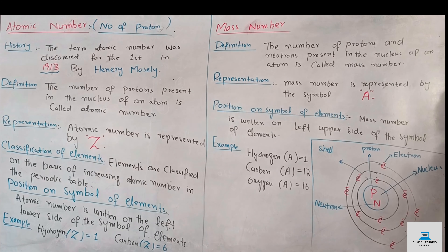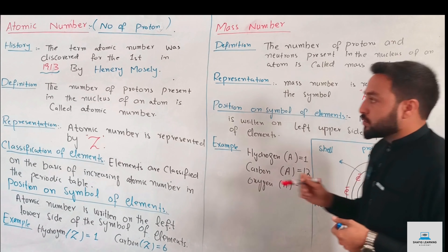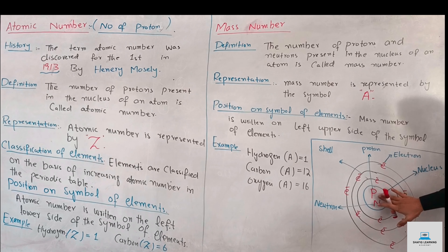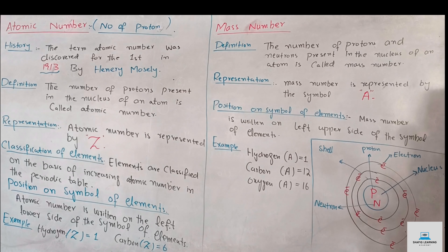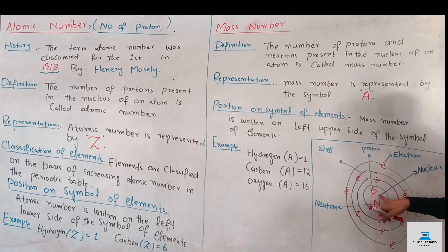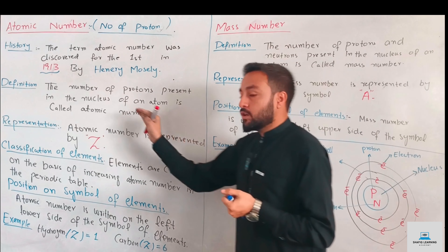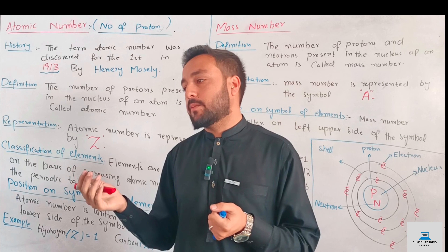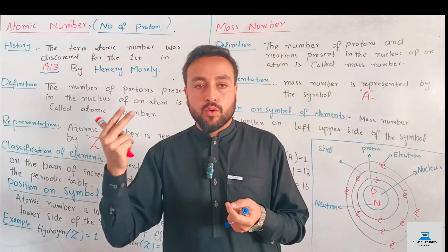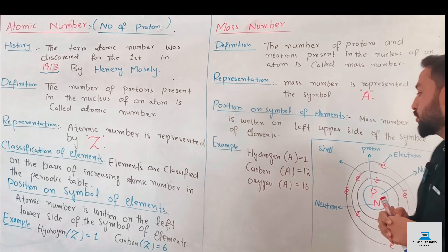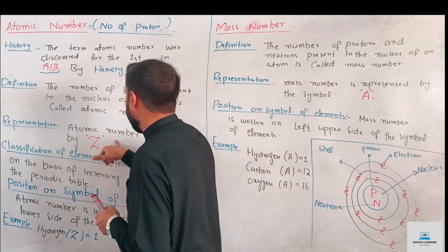The atomic number is determined by the number of protons present in the nucleus. If there is 1 proton, the atomic number is 1; 2 protons give atomic number 2; and 3 protons give atomic number 3.